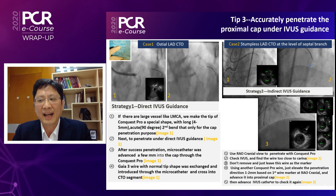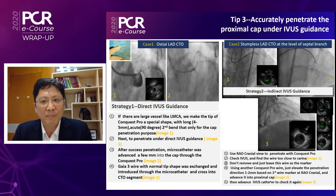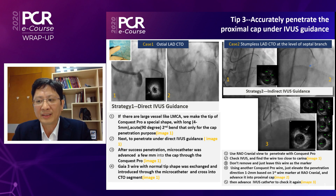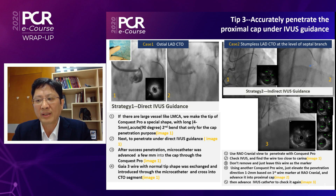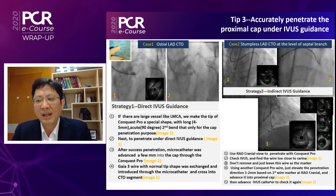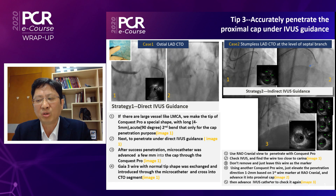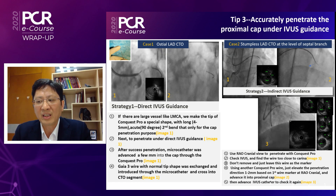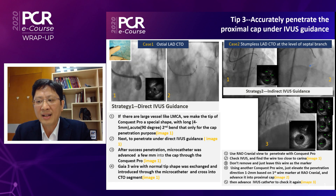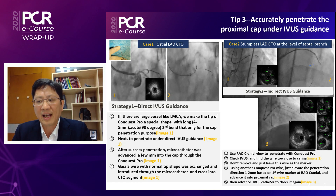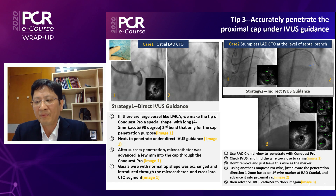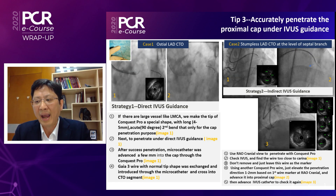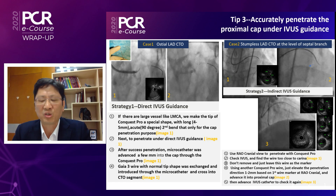Strategy two is for indirect IVA guidance, just like case two, where there is little room for wire manipulation and IVA pullback. We use the spatial view to penetrate with the Conquest Pro. After penetration, we check IVA and find the wire is too close to the corridor. So we don't remove it — we leave this guidewire as a marker. We use another Conquest Pro to adjust the penetration direction by two millimeters based on the first wire's mark, then advance into the proximal cap and check IVA again.